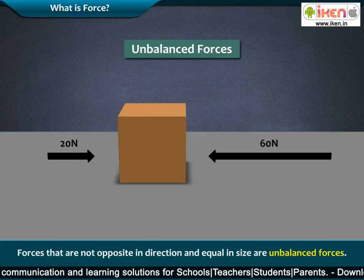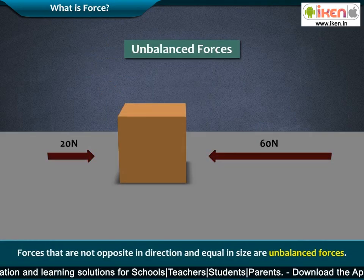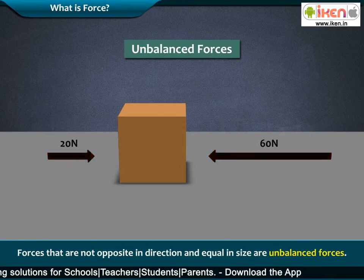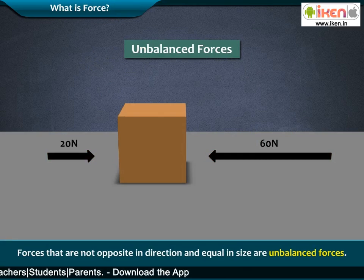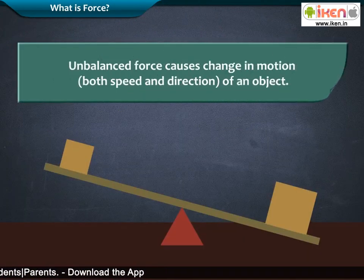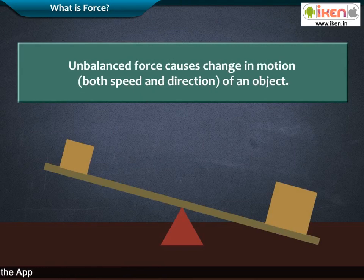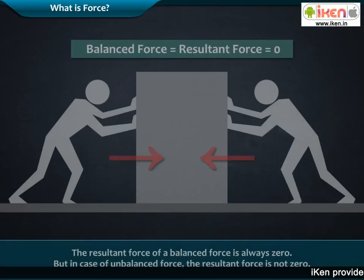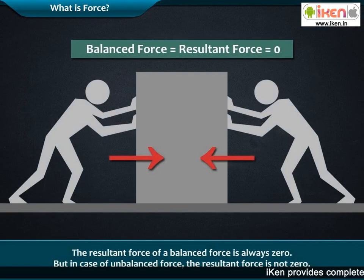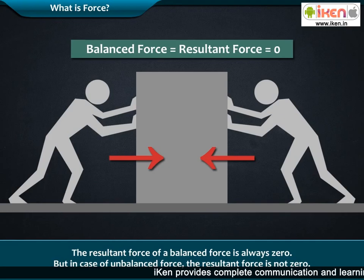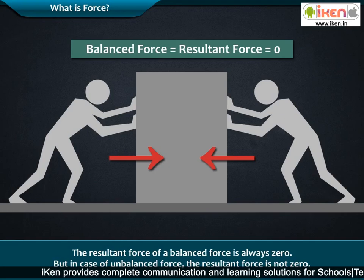Forces that are not opposite in direction and equal in size are unbalanced forces. An unbalanced force causes a change in the motion of an object. The resultant force of a balanced force is always zero, but in the case of an unbalanced force, the resultant force is not zero.